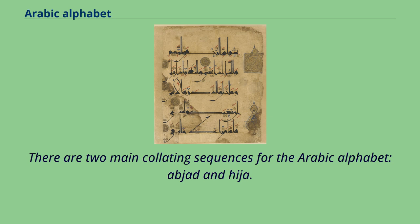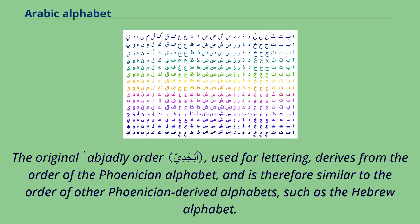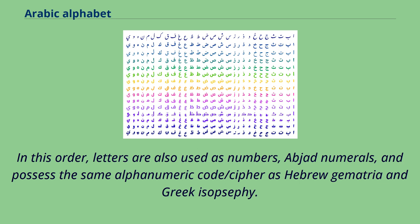There are two main collating sequences for the Arabic alphabet: Abjad and Hijai. The original Abjad order, used for lettering, derives from the order of the Phoenician alphabet, and is therefore similar to the order of other Phoenician-derived alphabets, such as the Hebrew alphabet. In this order, letters are also used as numbers — Abjad numerals — and possess the same alphanumeric cipher as Hebrew Gematria and Greek Isopsephi.